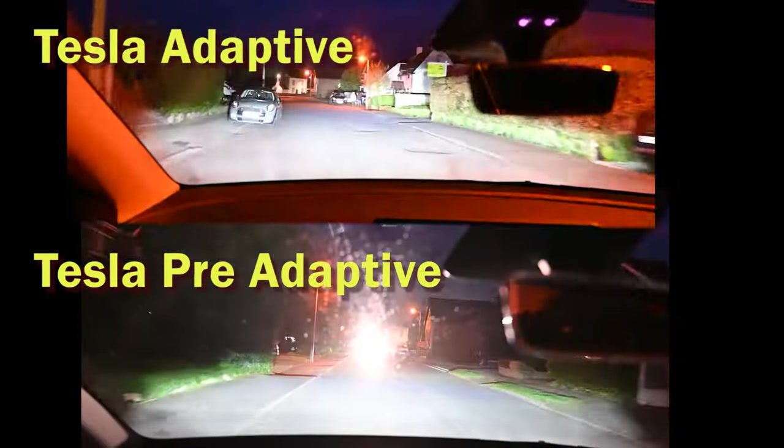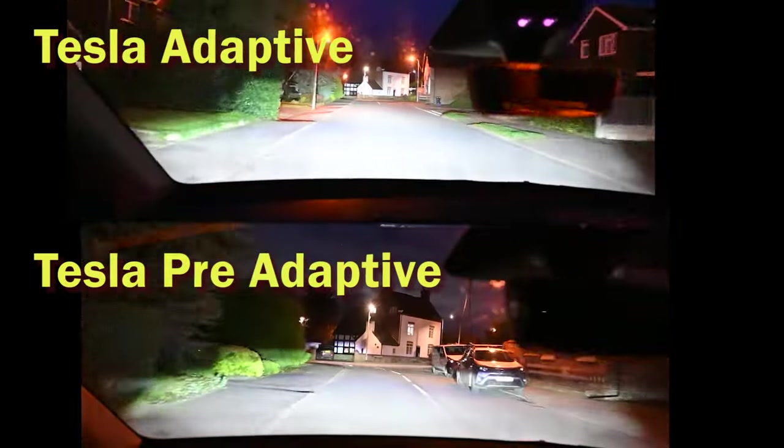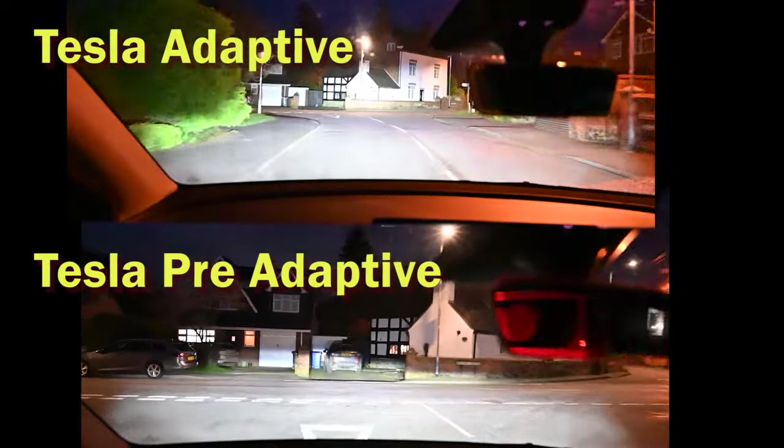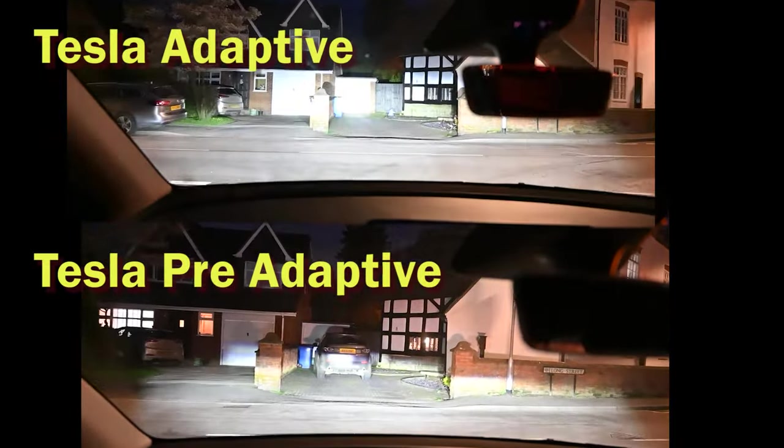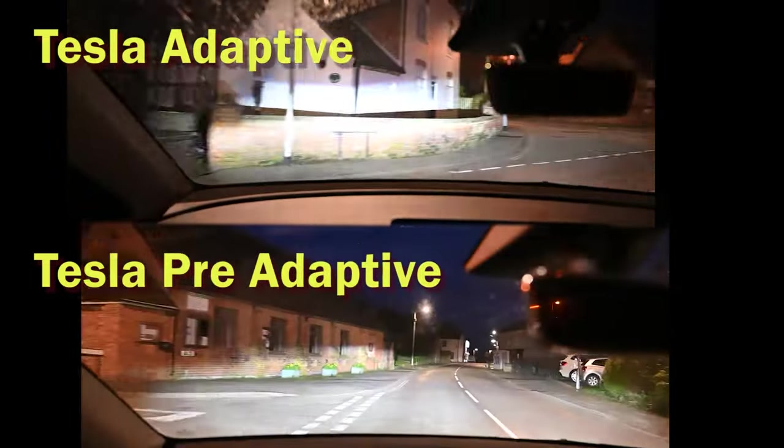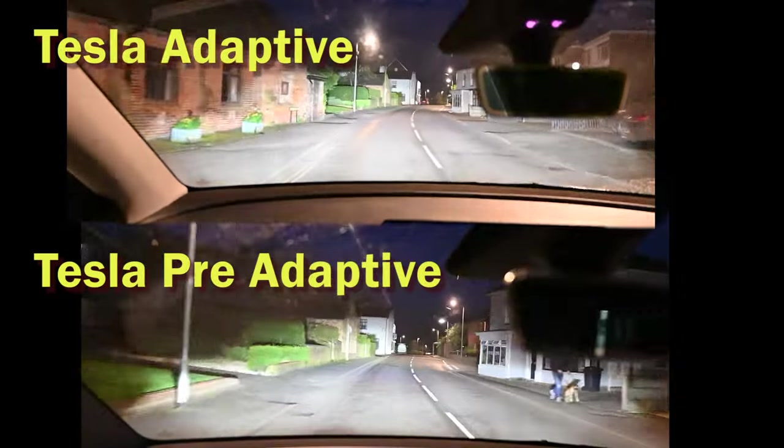One thing that does surprise us a little bit is with other cars we expect the headlights to dip in built-up areas. Even the adaptive headlights still stay on as bright as they can, irrespective of pedestrians or other people. They only basically dip for cars.